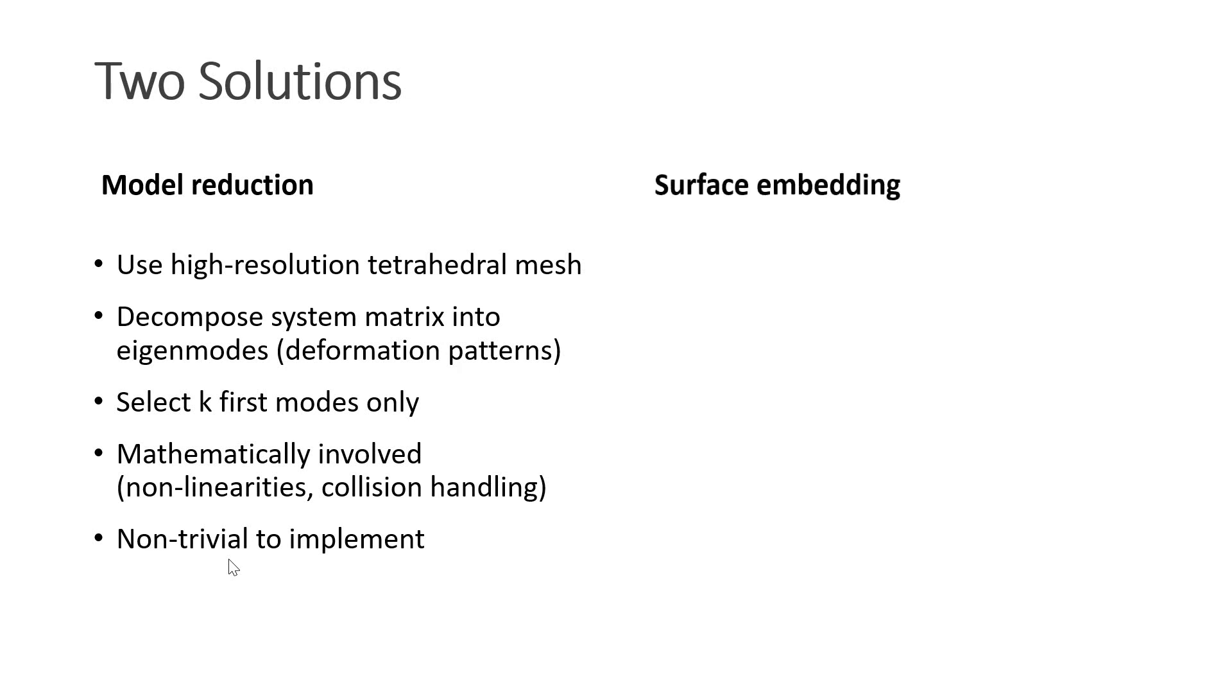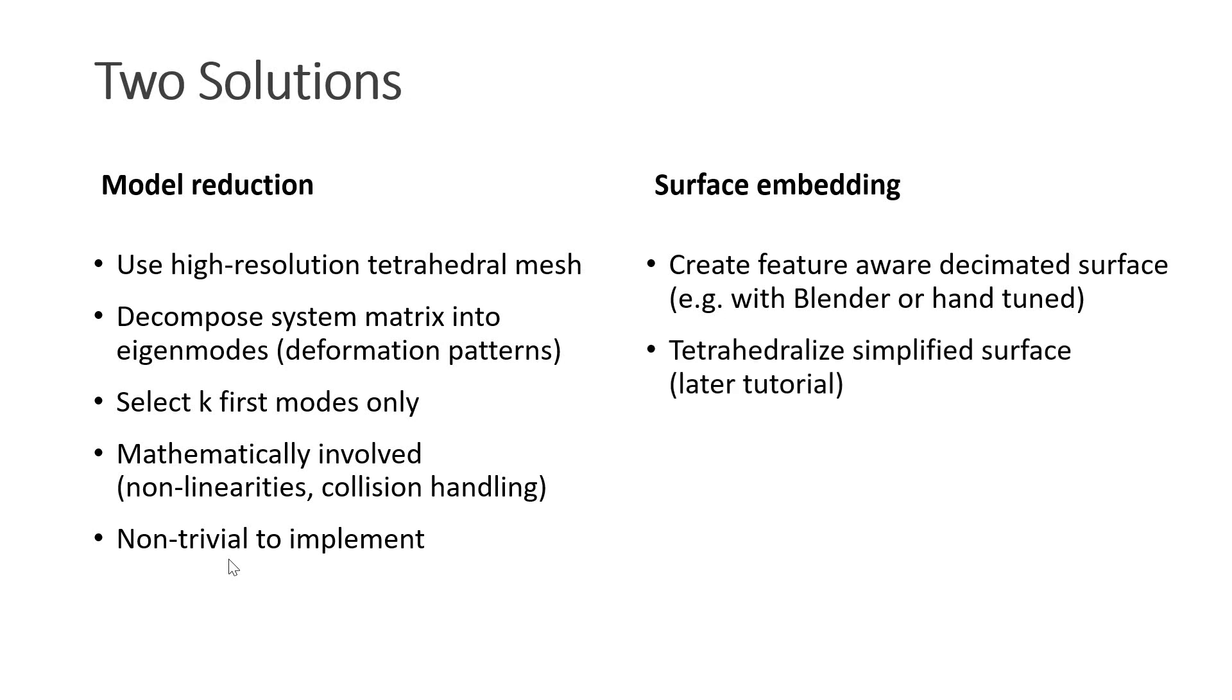I will explain to you the method of surface embedding. We first create a feature-aware decimated surface of the input mesh, for instance with blender. Then we tetrahedralize the simplified surface. I will show how to do this in a later tutorial. This yields a lower resolution tetrahedral mesh. Then we embed the visual mesh in the volumetric mesh and I will show you how to do this in this tutorial. This method is very simple to implement as you will see.